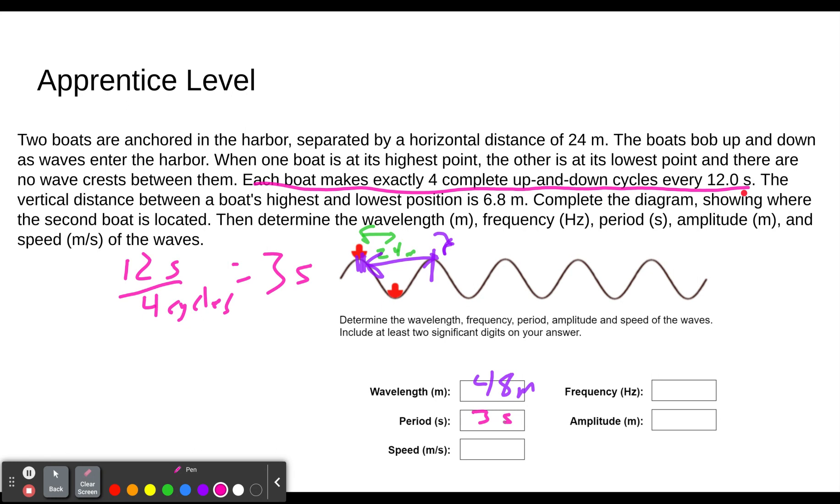The vertical distance between the boat's highest and lowest position is 6.8 meters. So the wave height is 6.8 meters. And if we want the amplitude, remember the amplitude is from equilibrium. And so half of the wave height, whether you're going up to the crest or down to the trough, half of the wave height is the amplitude. So 6.8 is the wave height, then 3.4 meters is the amplitude.